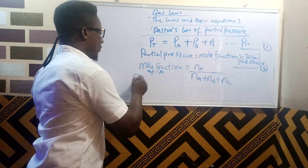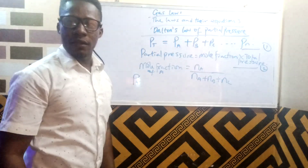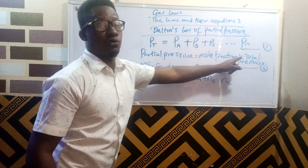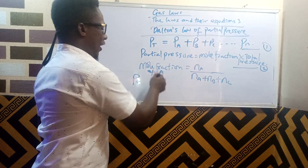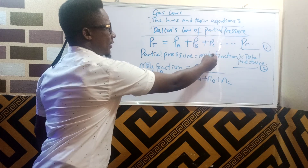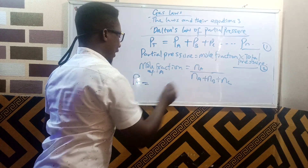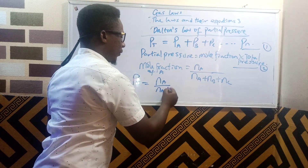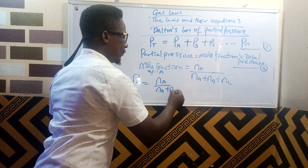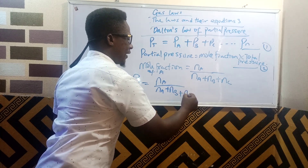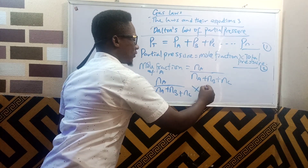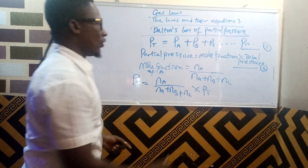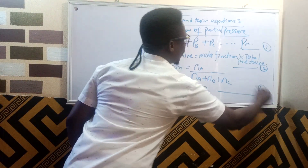To find the partial pressure of A, for instance, the partial pressure is the mole fraction multiplied by total pressure. The mole fraction of A is Na over (Na plus Nb plus Nc), multiplied by Pt, which is the total pressure. Call this equation 3.